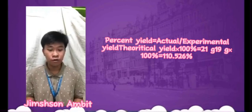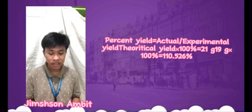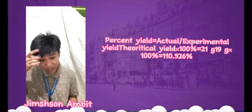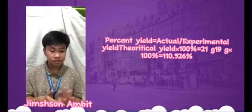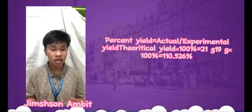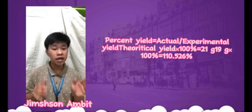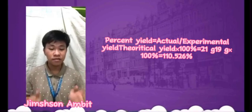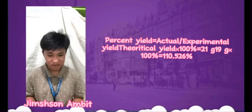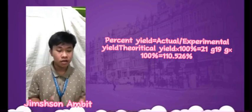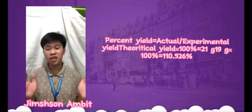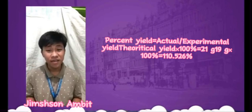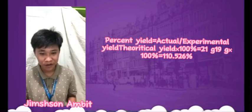Step 3: Plug the yields from step 1 and step 2 into the percent yield formula and calculate the percent yield. Percent yield = (actual or experimental yield ÷ theoretical yield) × 100%. So: 21 grams ÷ 19 grams × 100% = 110.526%. Rounded to one decimal place, the percent yield for this chemical reaction is 110.5%. That's all for today's topic.